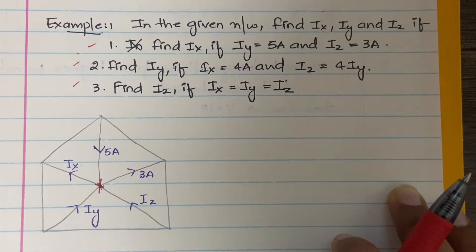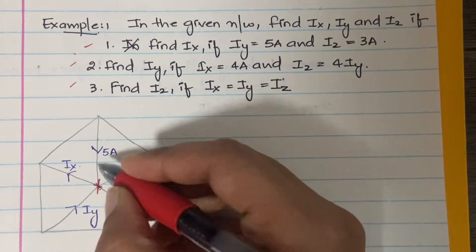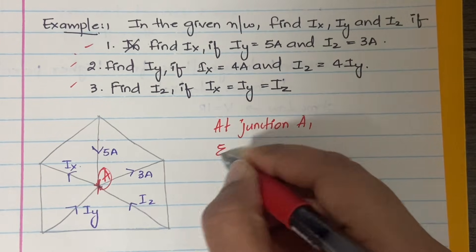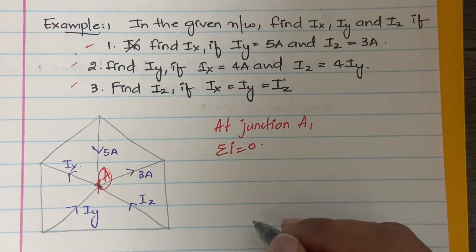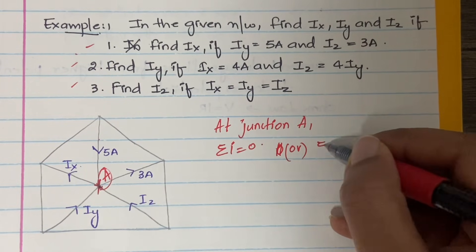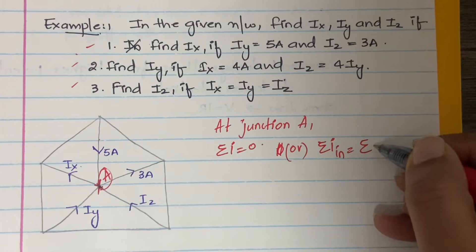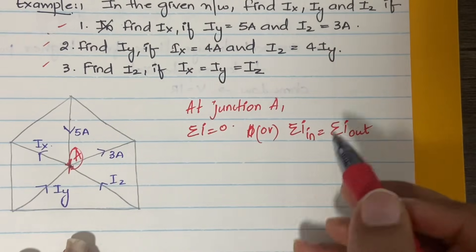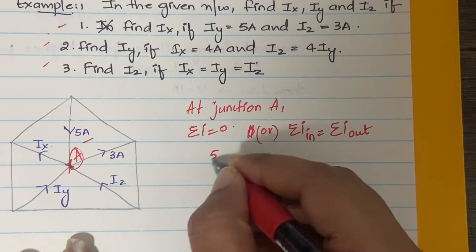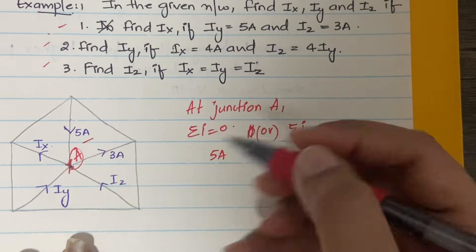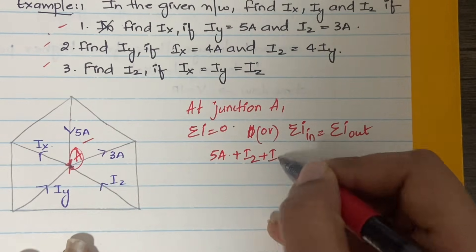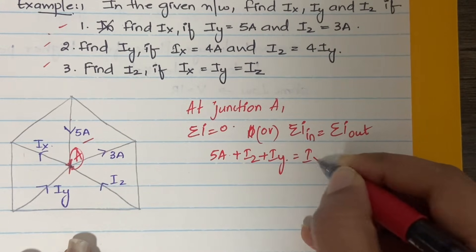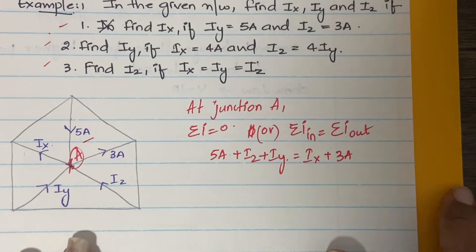Let us write the KCL equation. Consider this as junction A. At junction A, the sum of all currents equals zero, or equivalently, the sum of incoming currents equals the sum of outgoing currents. The incoming currents are 5 amperes, iz, and iy. The outgoing currents are ix and 3 amperes. So the KCL equation is: 5 + iz + iy = ix + 3.